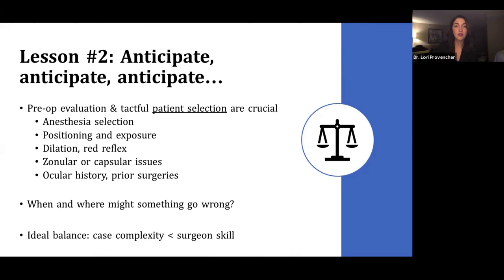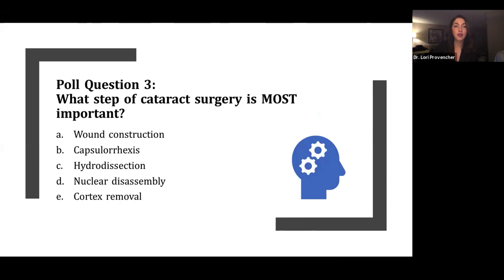We'll do one more poll question here. What step of cataract surgery, in your opinion, is most important? Is it wound construction, capsulorexis, hydrodissection, nuclear disassembly, or cortex removal? And it looks like the vast majority of you said capsulorexis followed by wound construction.